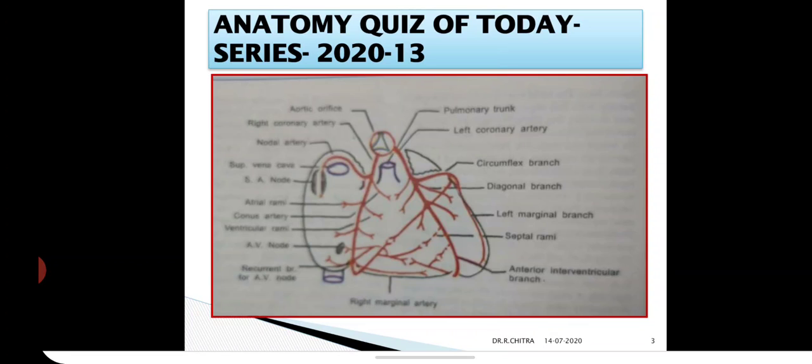If the right conus artery takes origin from the anterior aortic sinus, then it should be called the third coronary artery. This right conus artery sometimes arises from the anterior aortic sinus, and then it is called the third coronary artery.